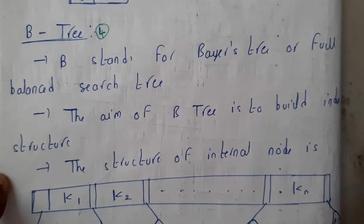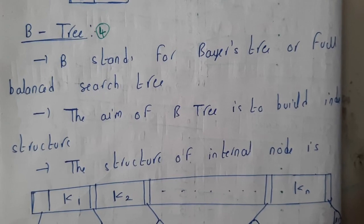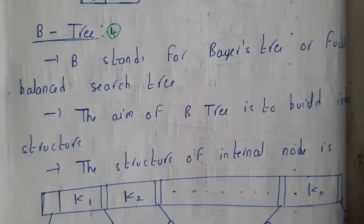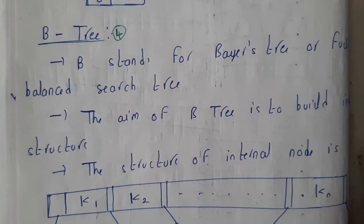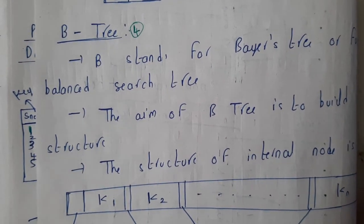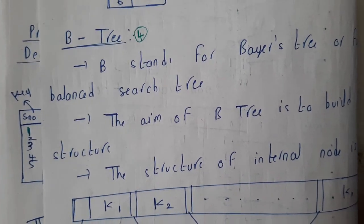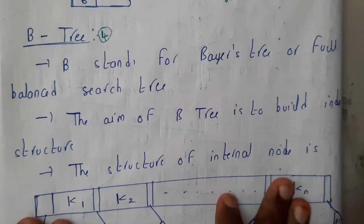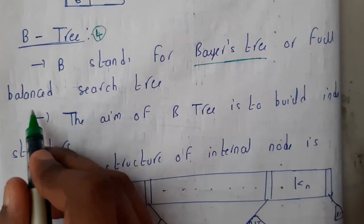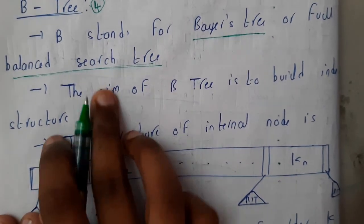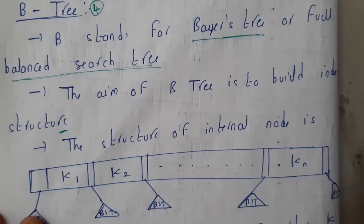Hello guys, we are back with our next tutorial. In this tutorial let us go through the introduction of a B-tree and we will also solve a problem, so that we'll have a clear idea. The thing you should remember is that B and B+ tree concepts are really the same — there is only a small change. B stands for Bayer's tree or balanced tree, balanced search tree. The aim of this balanced search tree is to build an index structure, so these topics all belong to indexing.